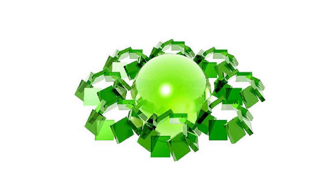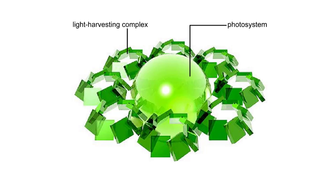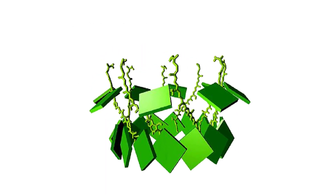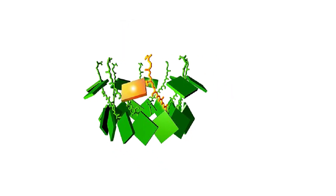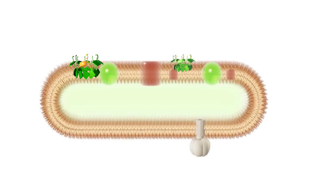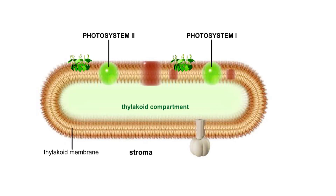Embedded in a chloroplast's thylakoid membrane are many photosystems. Each is surrounded by an array of light harvesting complexes. Pigments in these complexes can intercept photon energy arriving from any direction. To keep things simple, we'll show just one of the many light harvesting complexes near each photosystem.